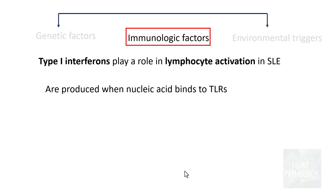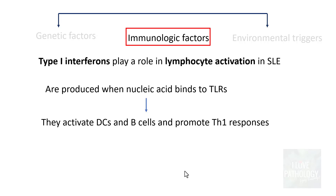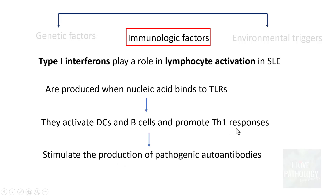Where does this nucleic acid come from? It comes from cell damage leading to apoptosis or any form of cell death, releasing nuclear content outside. When such nucleic acid binds to toll-like receptors, it activates dendritic cells as well as B cells, and promotes T helper 1 cell responses, which finally leads to stimulation of these cells to produce pathogenic autoantibodies, resulting in inflammation and various other manifestations.